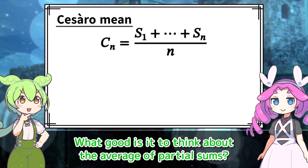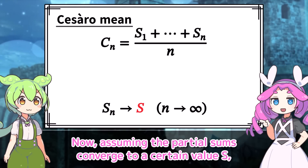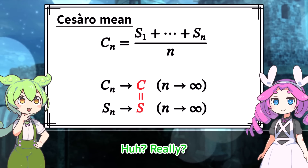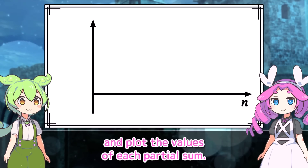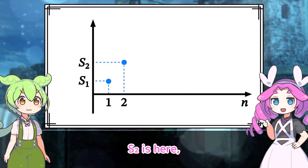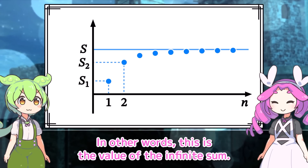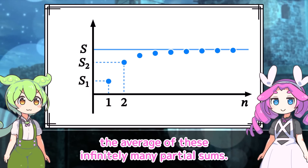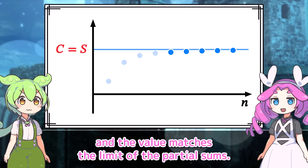What good is it to think about the average of partial sums? Well, just watch. The value of an infinite sum is defined as the limit of its partial sums. Assuming the partial sums converge to a certain value s, the Cesaro mean also converges to the same value. Why does that happen? A proper proof is difficult, so I'll explain it intuitively. Take n on the horizontal axis and plot the values of each partial sum. Let's assume the partial sums converge here — that's the value of the infinite sum. The Cesaro mean is the average of partial sums, so intuitively the limit of the Cesaro mean is the average of these infinitely many partial sums. Since we're taking the average of infinitely many terms, the earlier ones can be ignored, and the value matches the limit of the partial sums.